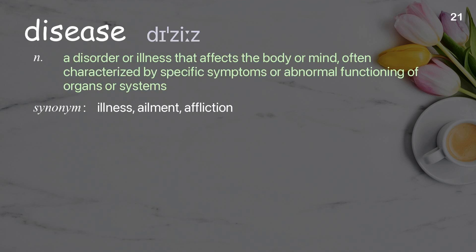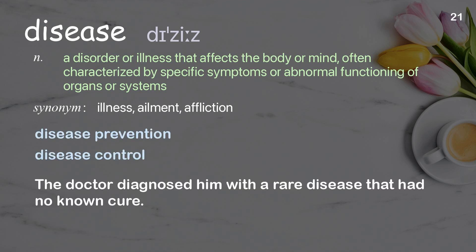Disease: a disorder or illness that affects the body or mind, often characterized by specific symptoms or abnormal functioning of organs or systems. Examples: disease prevention; disease control. The doctor diagnosed him with a rare disease that had no known cure.